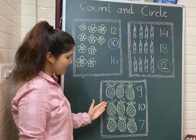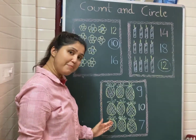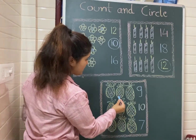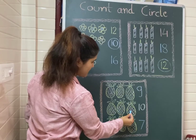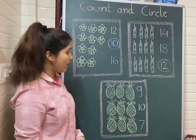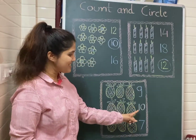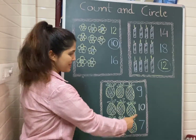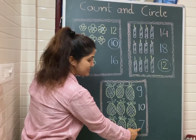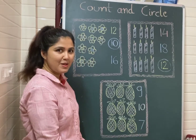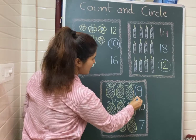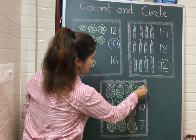Children, here you can see pineapples. Now let's count the pineapples. 1, 2, 3, 4, 5, 6, 7, 8, 9. Now tell me children, which is the correct number here? Number 9, 10, or number 7? Yes, number 9. We need to circle number 9.